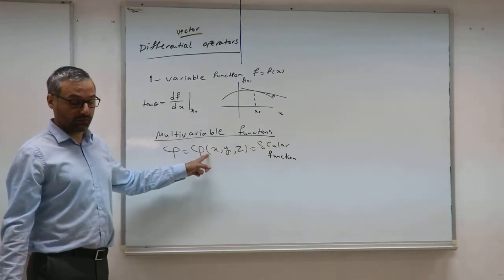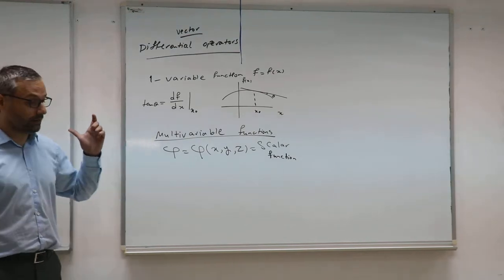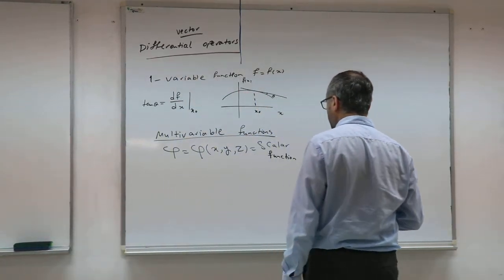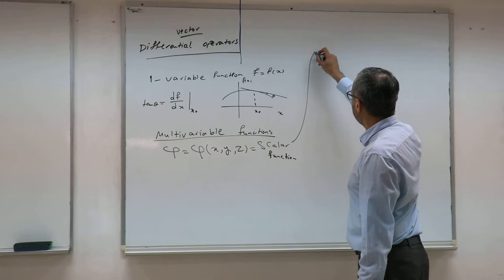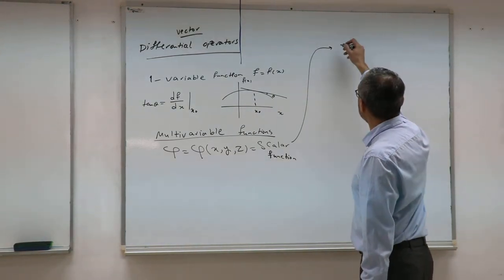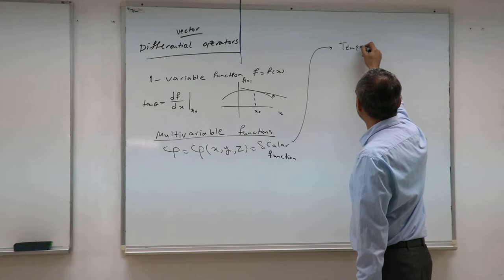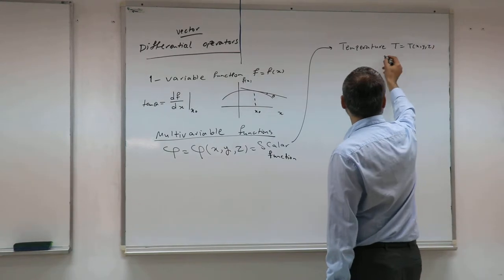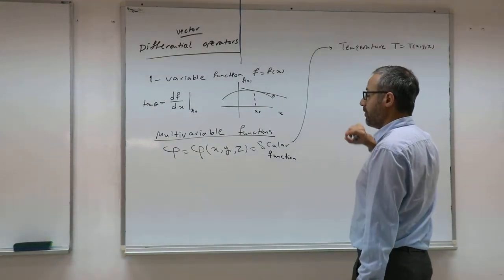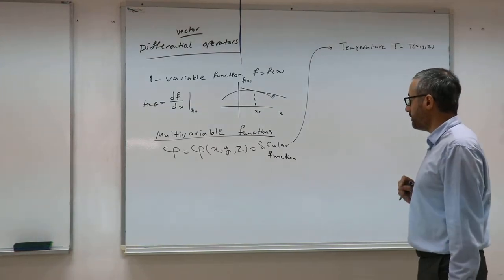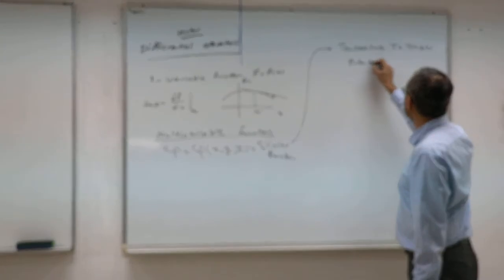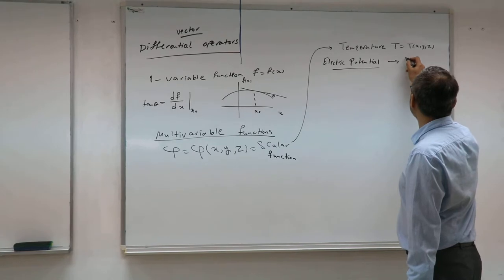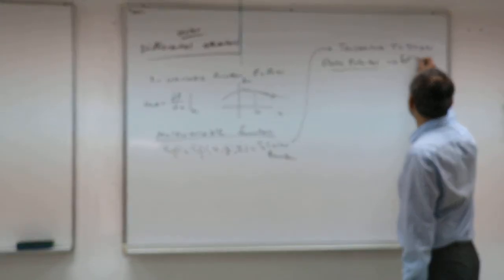For such a function you do not need to know the direction or orientation of any surface. There are many multivariable scalar functions that appear in different subjects of physics. For example, temperature is a scalar function. Pressure in homogeneous systems is also a scalar function. Electric potential V(x,y,z) is also a scalar function.